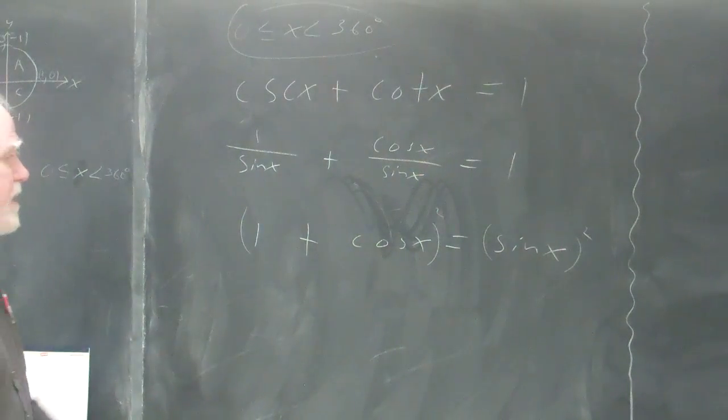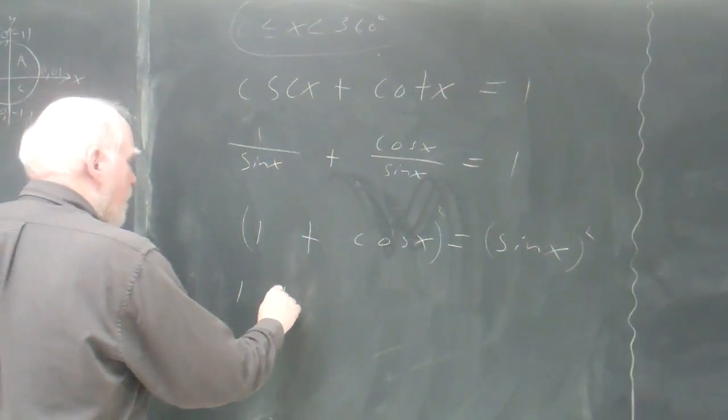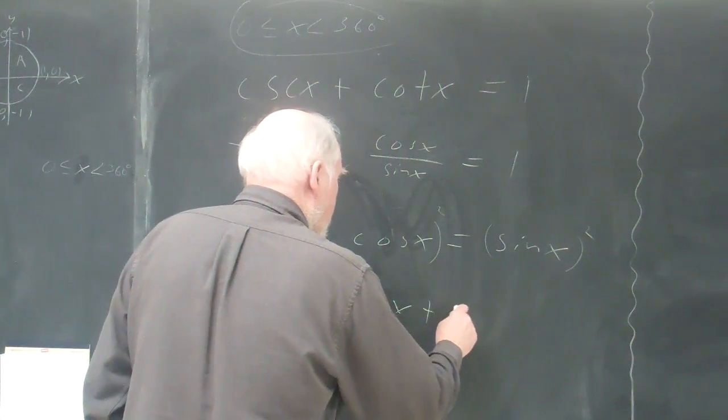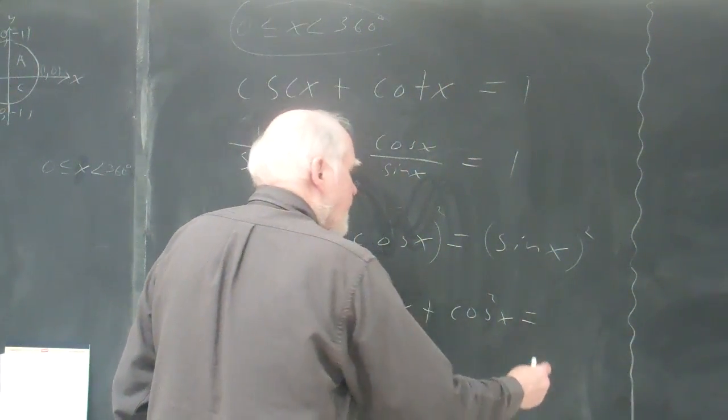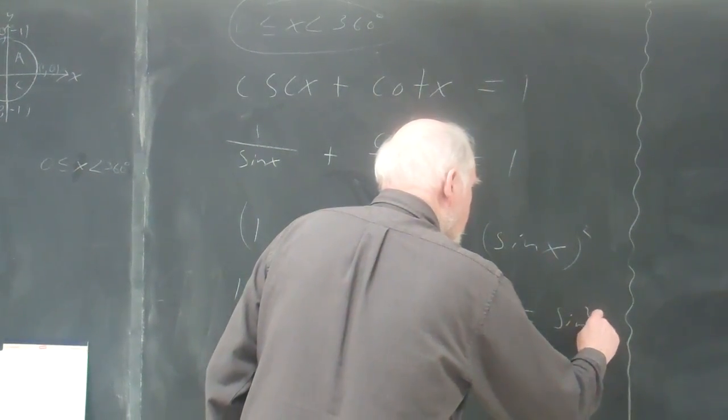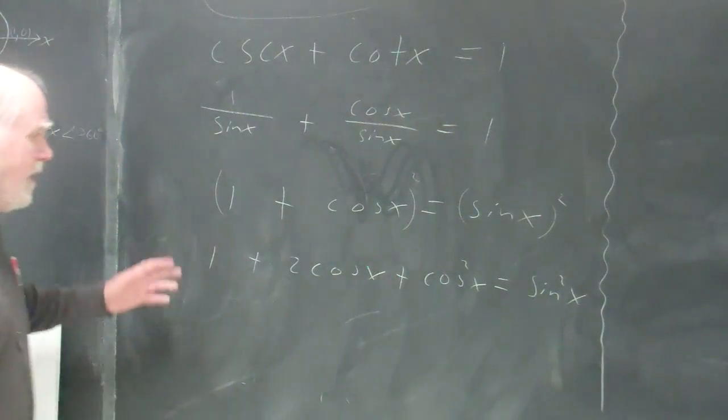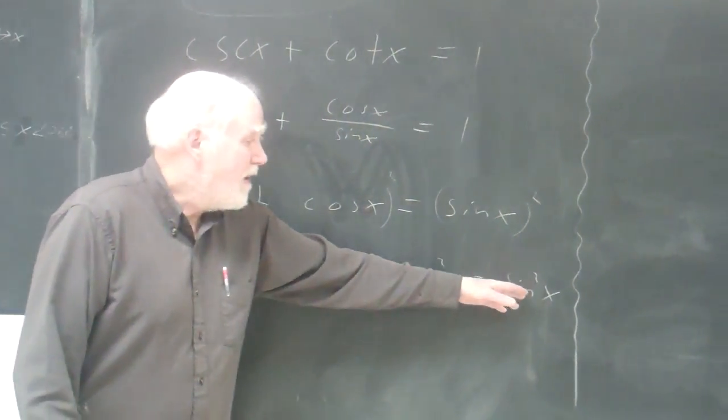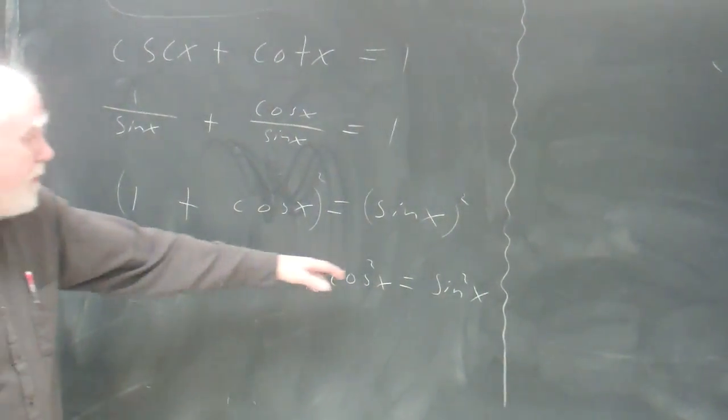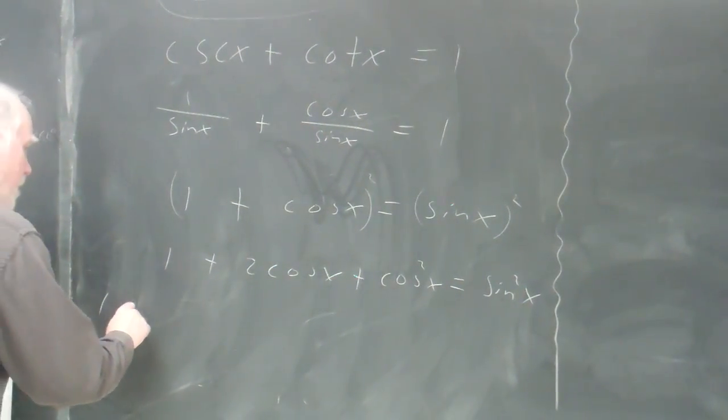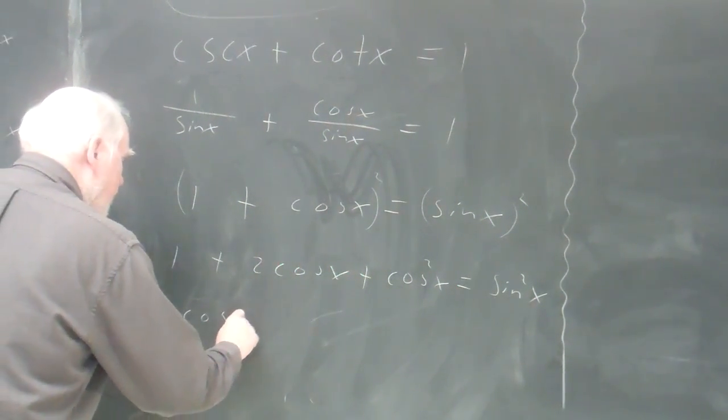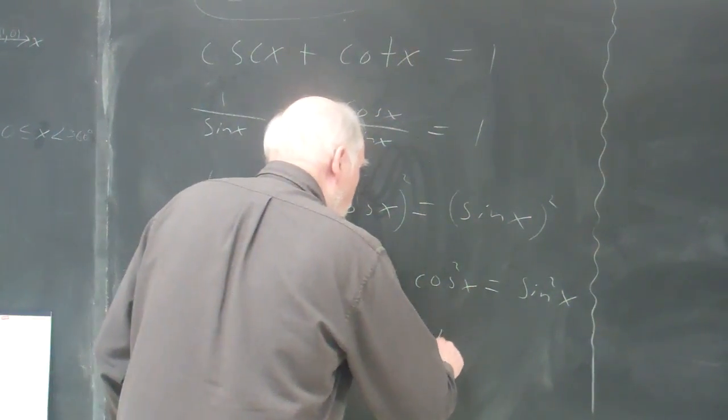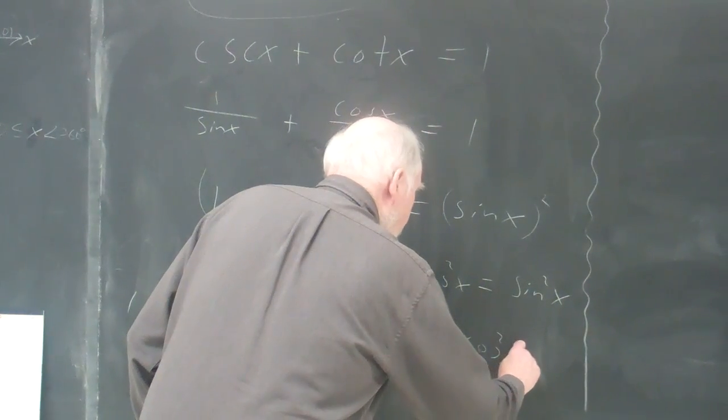So I square this side. Of course, I'm squaring a binomial, so I get one plus two cosine x plus cosine squared x equals sine squared x. That looks pretty good. In other words, this looks like a quadratic, but the only problem is you've got sine squared there. But we can turn this into cosine squared, right?